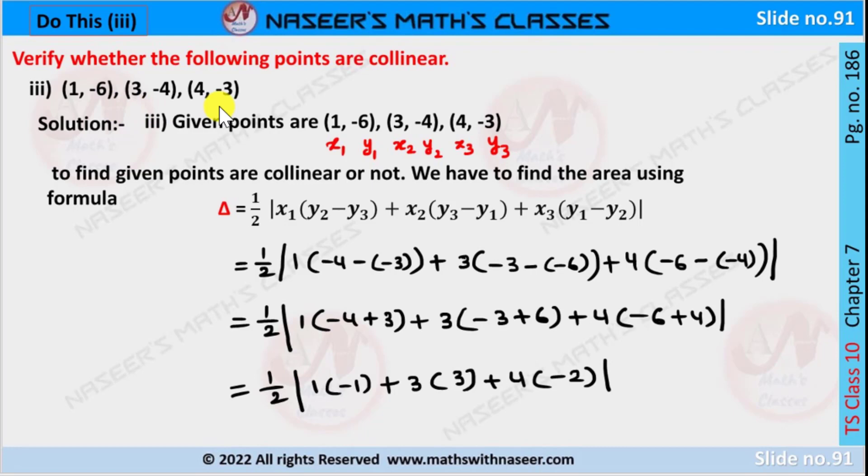3 comma minus 4, 4 comma minus 3. We let the xy coordinates of first point are x1 y1, xy coordinates of second point are x2 y2, and the third point xy coordinates are x3 y3.